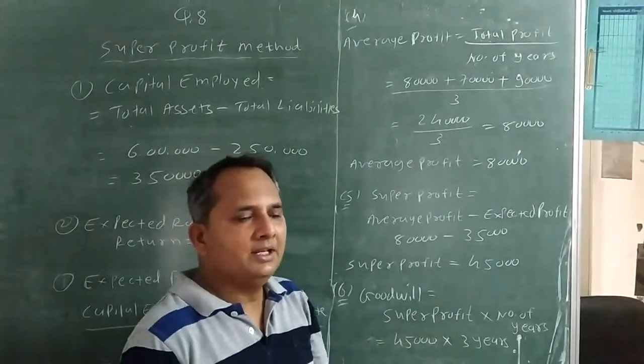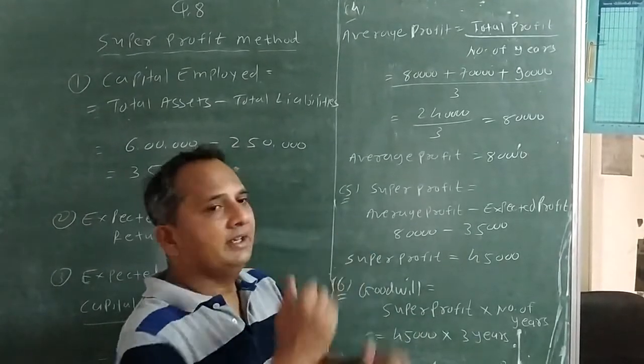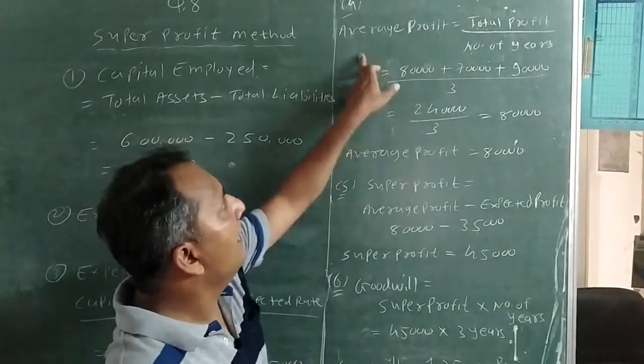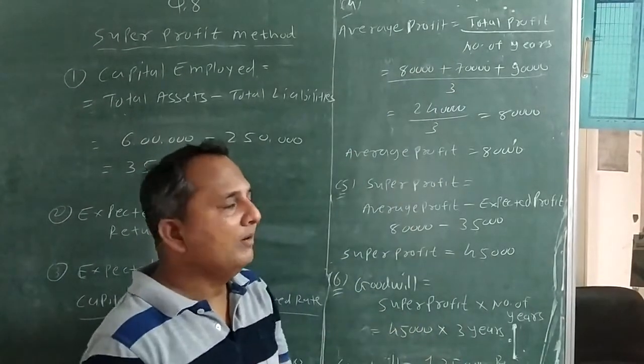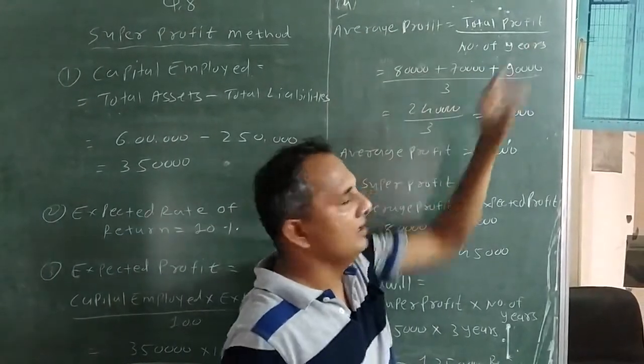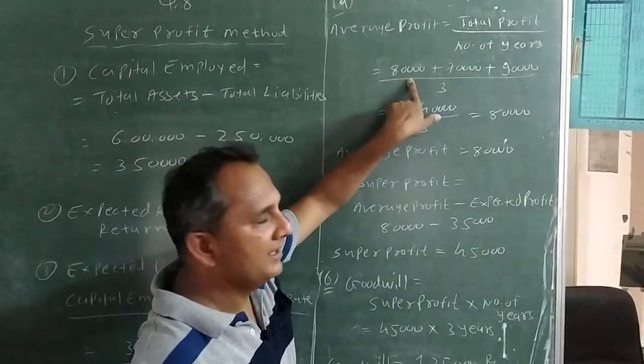Now step number 4. You can see that in the sum, the profit is given increase and decrease. So we will find out average profit. Formula of average profit is equal to total profit upon number of years.